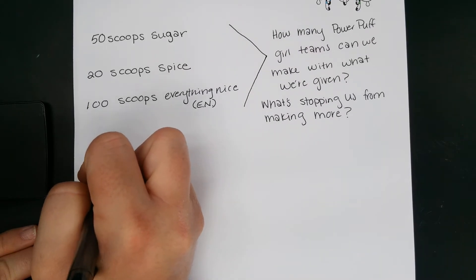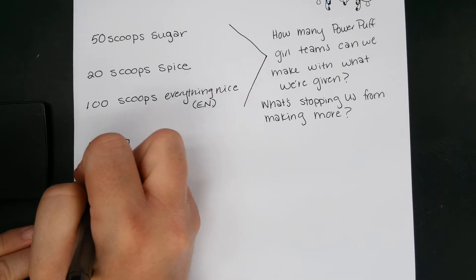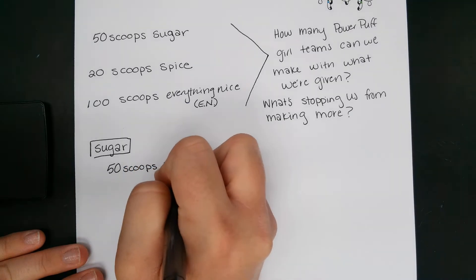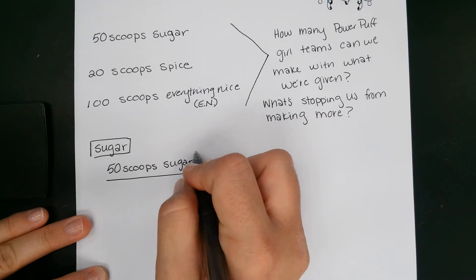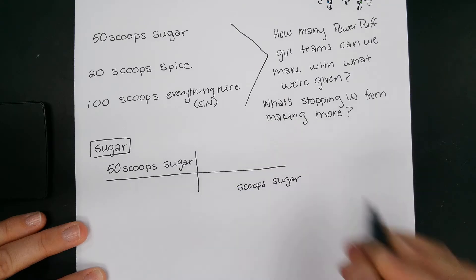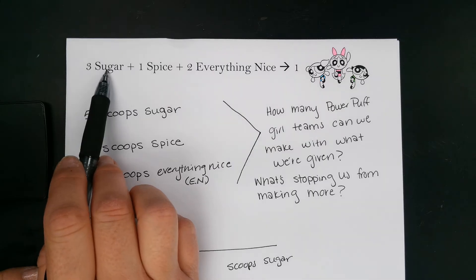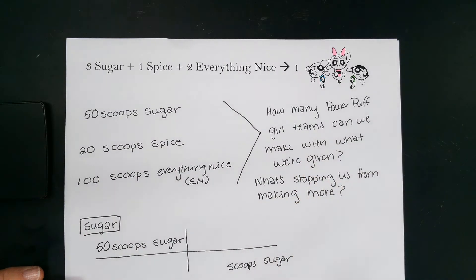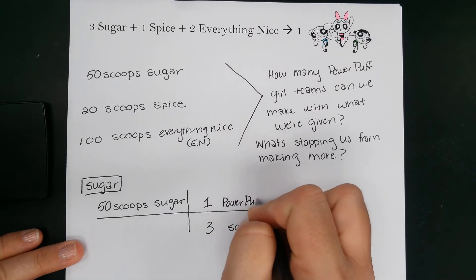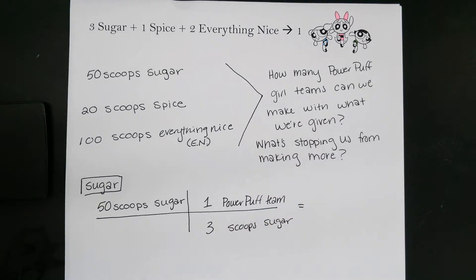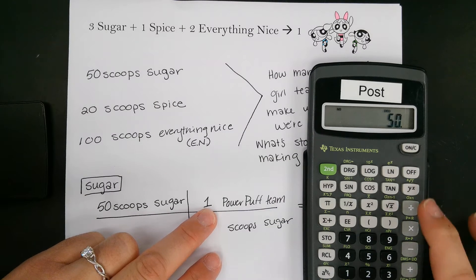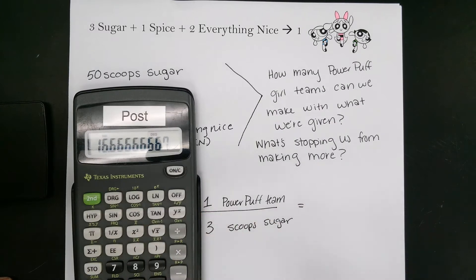We're going to take our scoops and convert them to Powerpuff Girls to figure out how many we could make with each ingredient. Starting with sugar: we have 50 scoops of sugar. We set up our conversion — scoops of sugar on top, bring it down below. Our equation tells us it takes three scoops of sugar to make one Powerpuff Girls team, so three scoops of sugar equals one Powerpuff team.